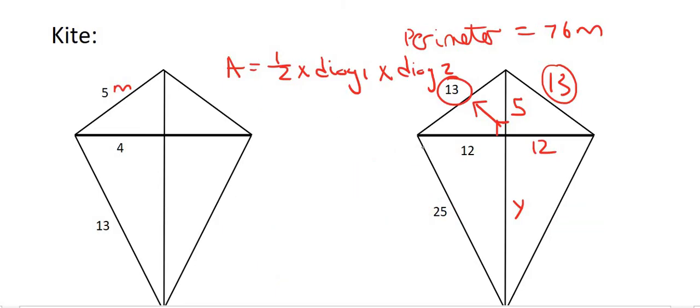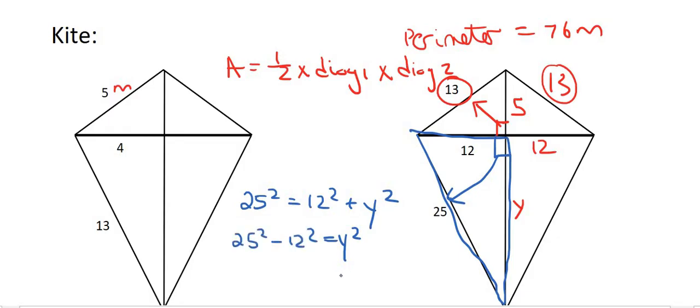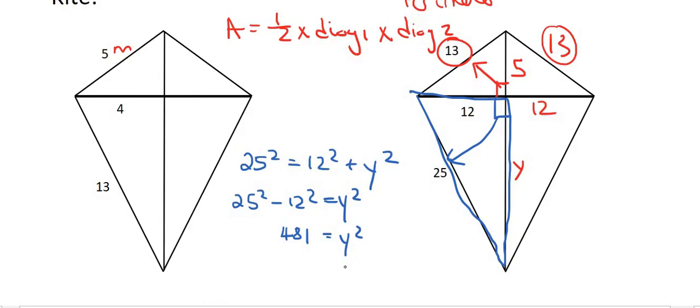Great. Then we could work inside this triangle over here. And we know that this is the 90 degrees. The 25 is the longest one. So you could say 25 squared is equal to 12 squared plus Y squared. Y squared would then be equal to 25 squared minus 12 squared. And so Y squared would eventually be equal to 481. You could then take the square root and you would find that Y is equal to 21.93. So that means that Y is 21.93.